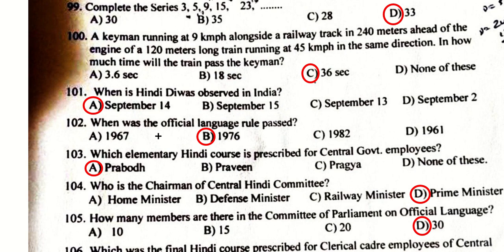A keyman running at 9 kmph is 240 meters ahead of a 120-meter-long train running at 45 kmph in the same direction. Calculating using relative speed method for same direction, the time for the train to pass the keyman is 36 seconds.